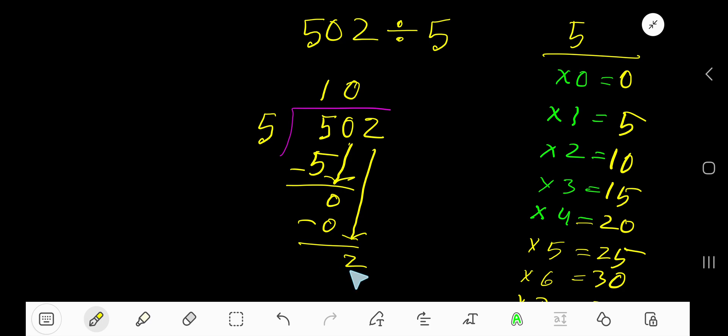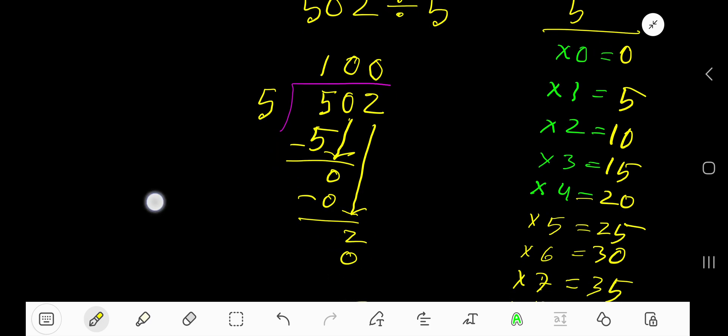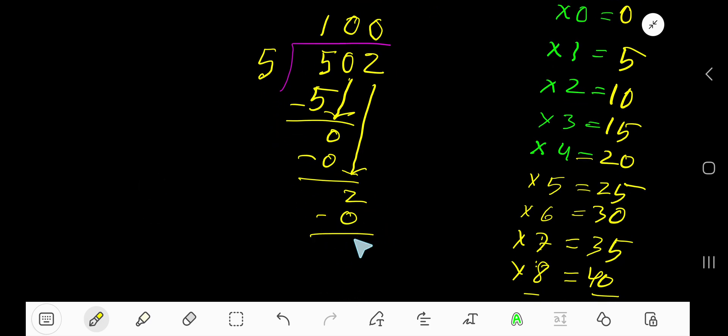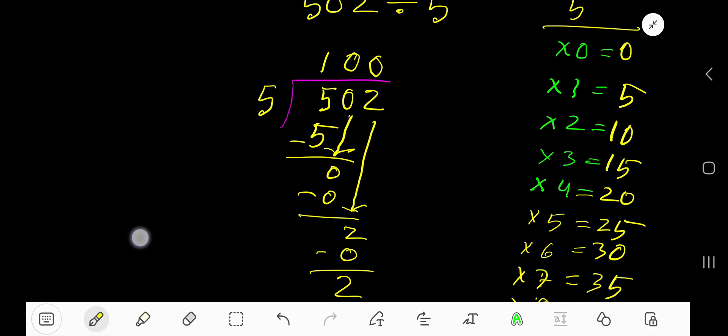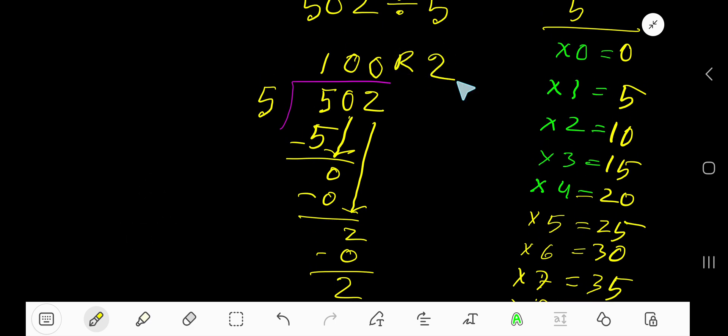Since 2 is less than 5, 5 goes into this 2 zero times. Write 0. 0 times 5 is 0. If you subtract, then you are getting 2. Now your answer is 100 remainder 2. But if you want to convert your answer into decimal form, then what will happen?